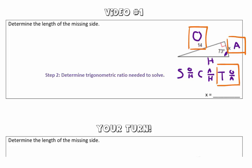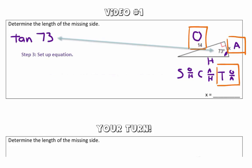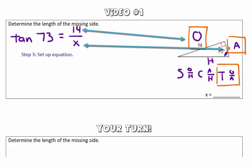So therefore, we're going to set up an equation using tangent. So we know that the tangent of our angle, which is 73 degrees, is equal to the ratio of the opposite side over the adjacent side. So it's equal to 14 over X.